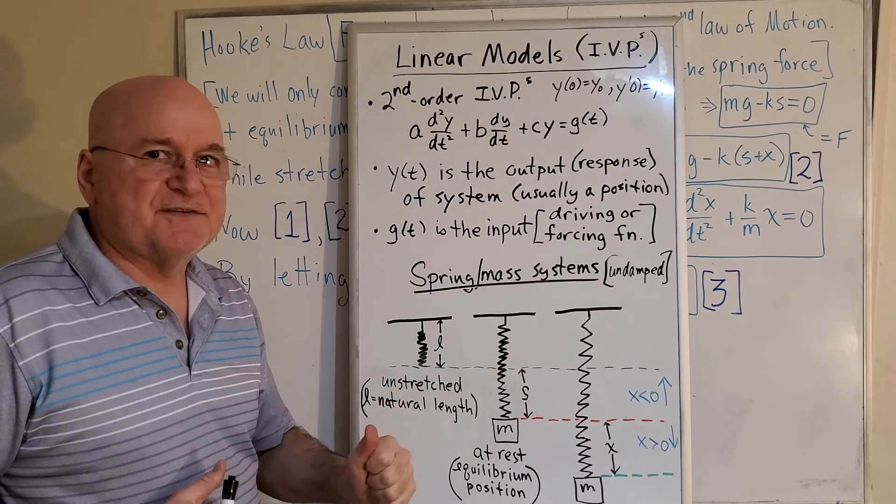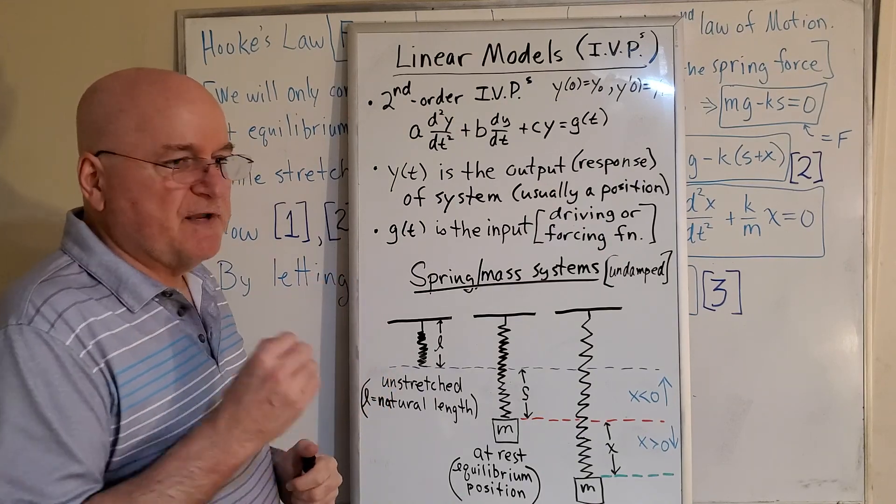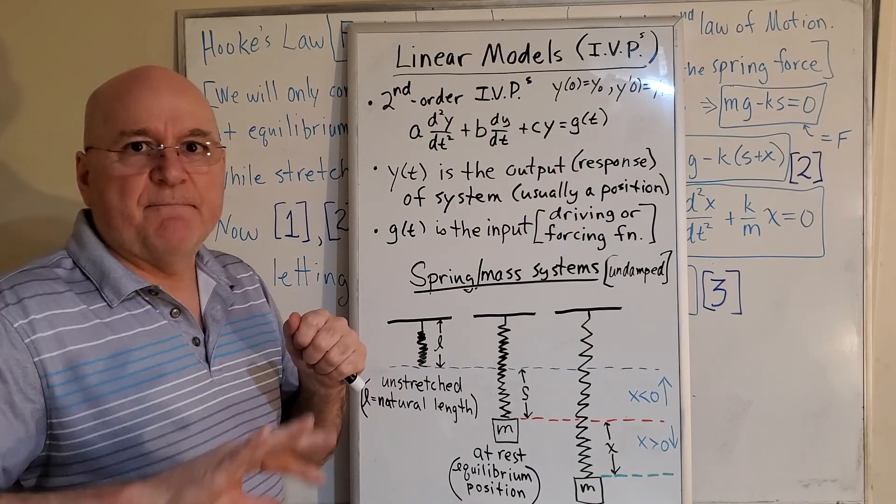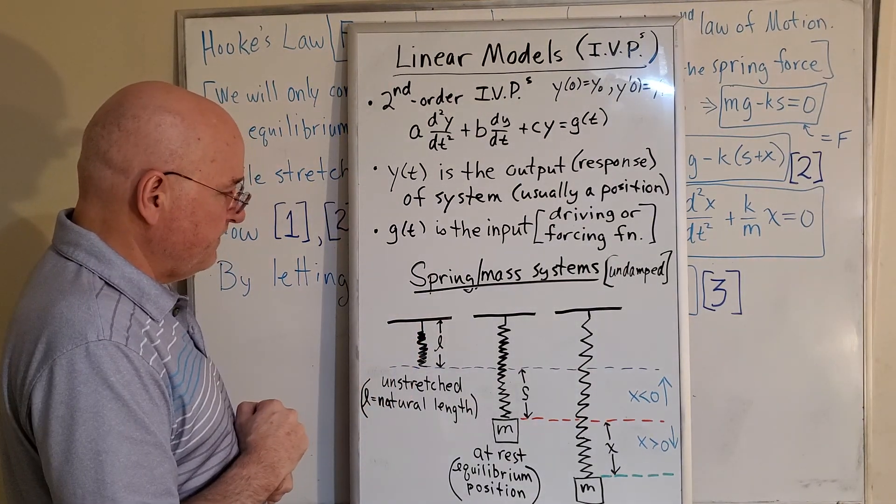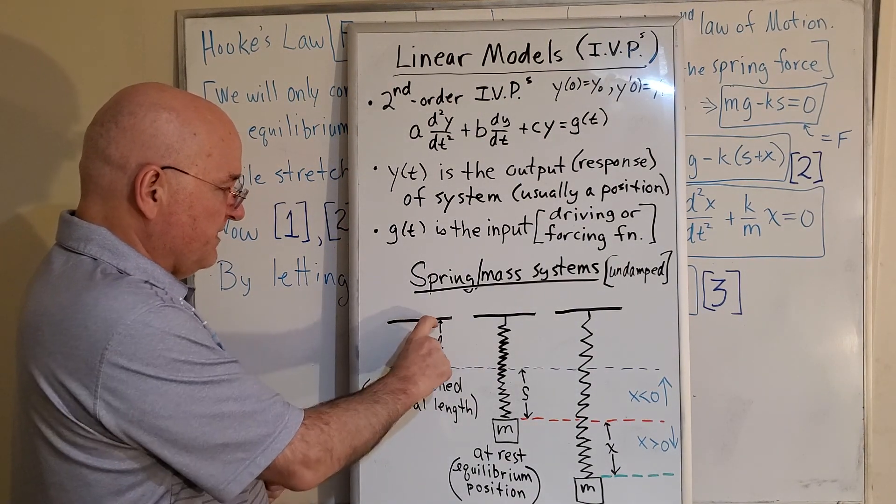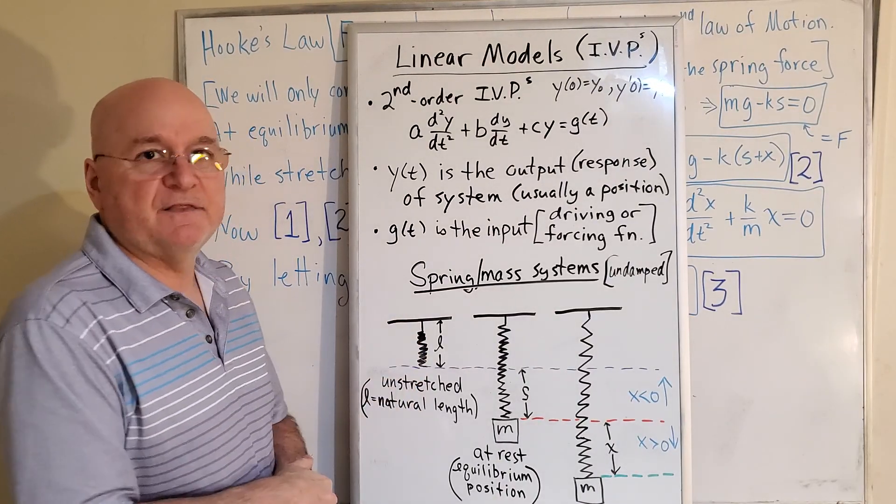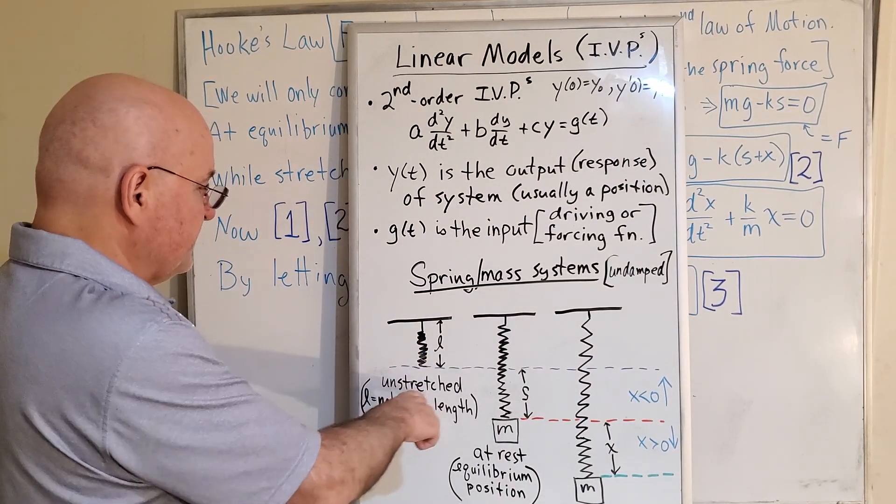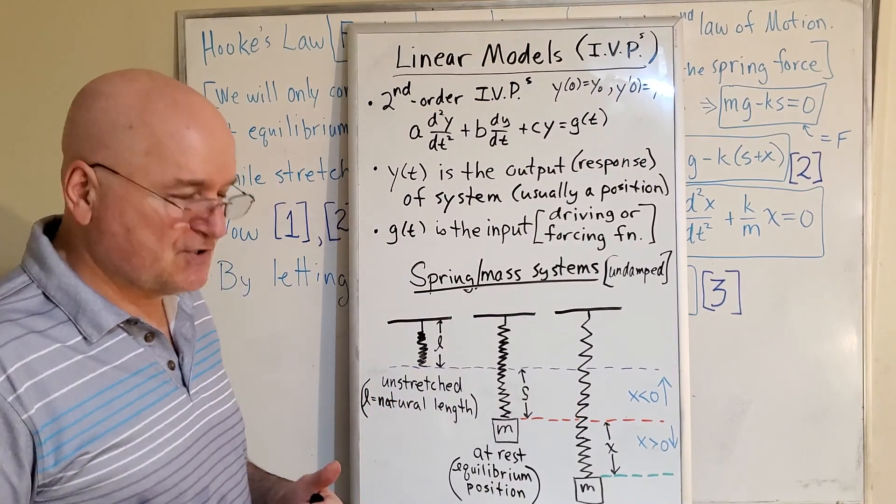Well, we need to get a little bit out of this diagram. The spring-mass system. Take the mass out of it for now. Here is a hanging spring, and this script L is just going to be the length of the spring with no weight on the end of it. So this is the unstretched, L is called the natural length of the spring.